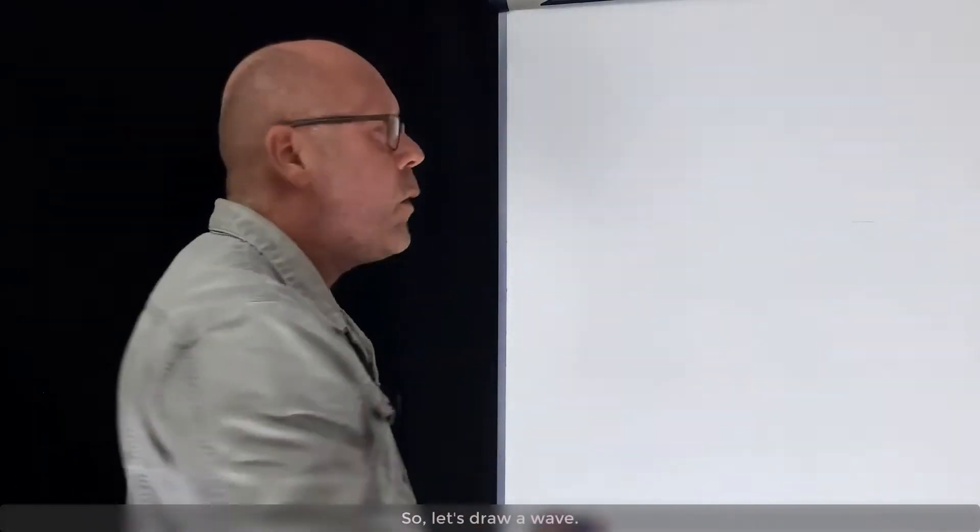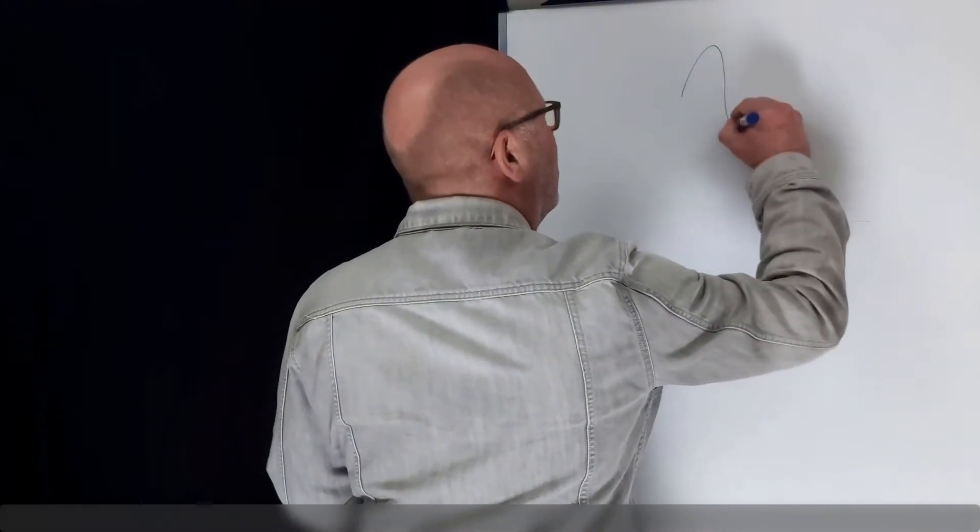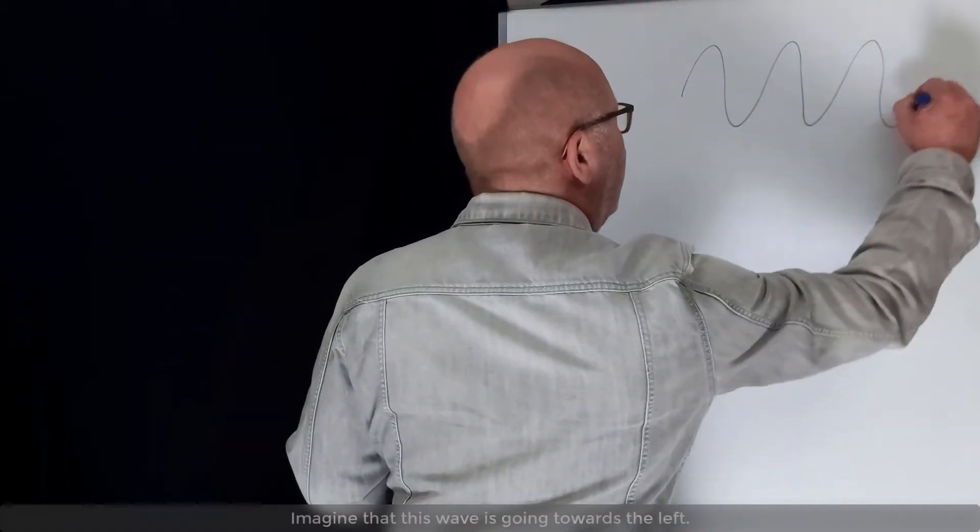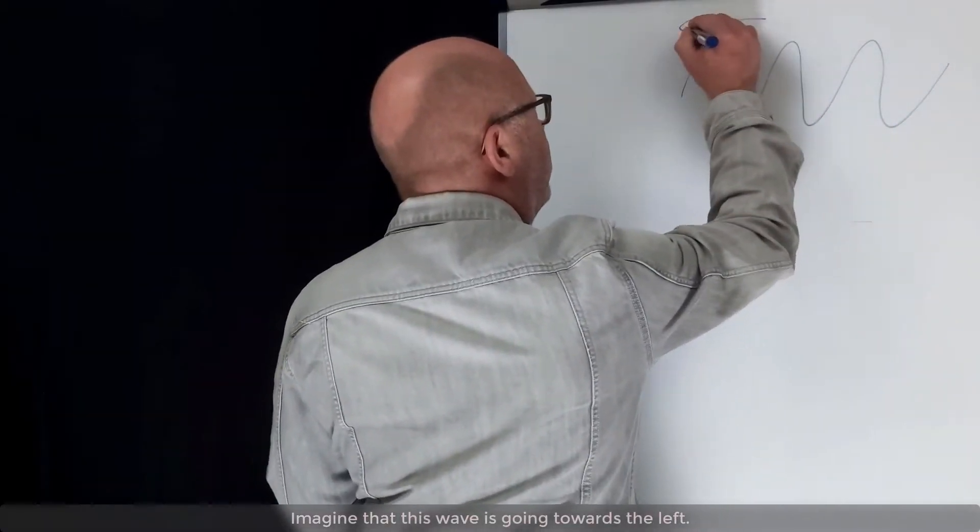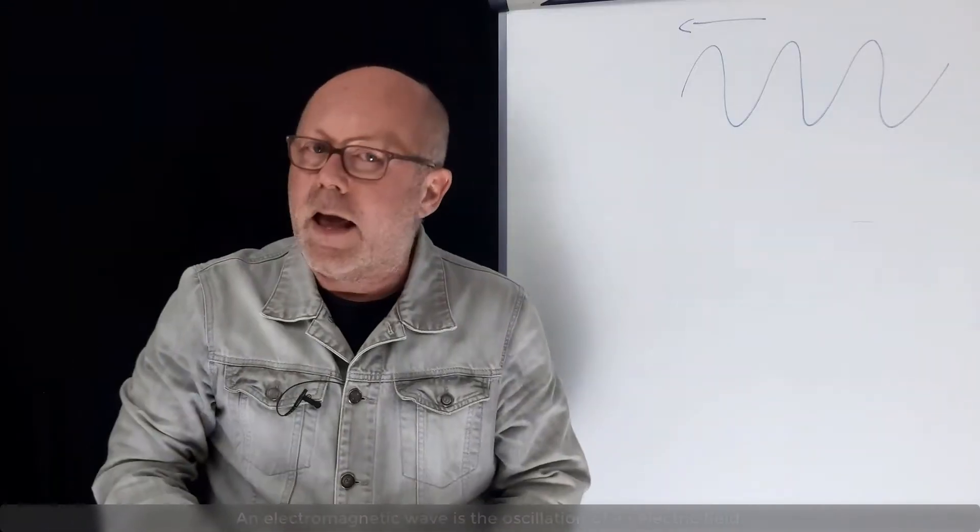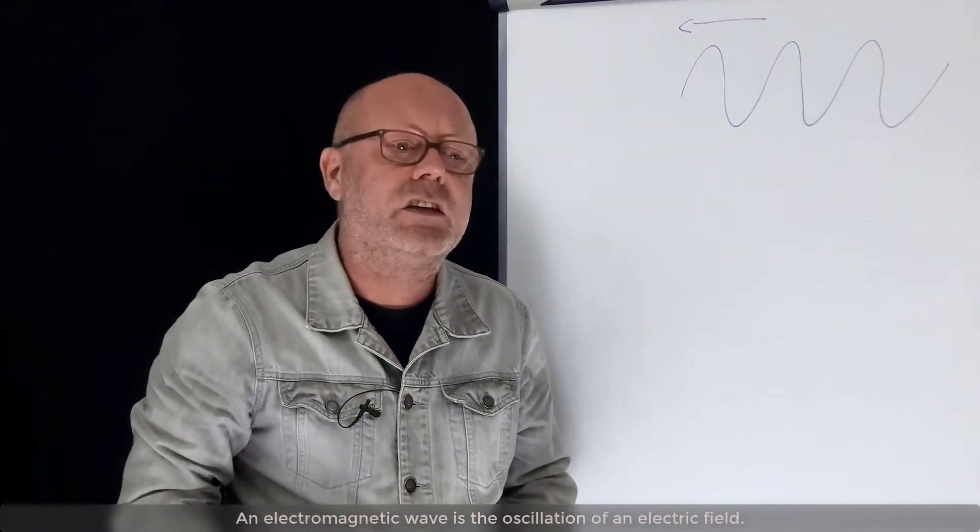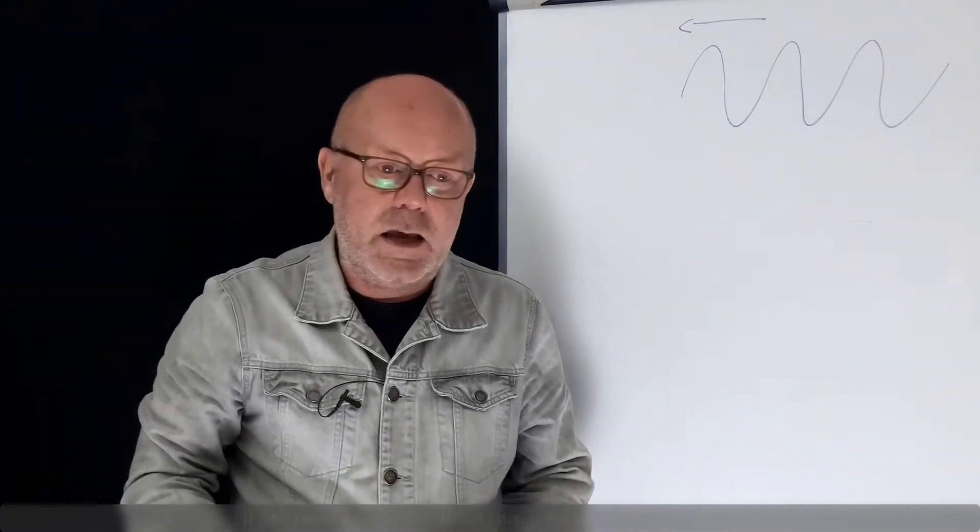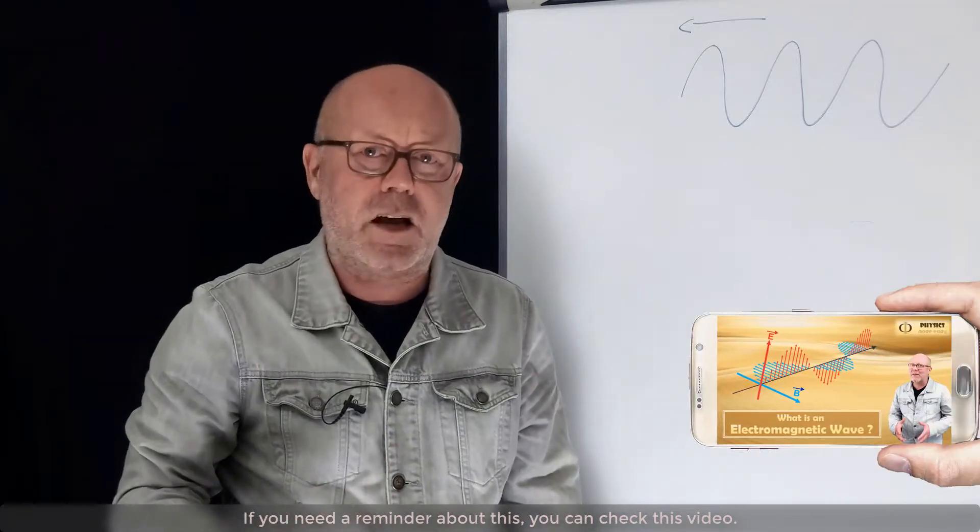Light is an electromagnetic wave. So, let's draw a wave. Imagine that this wave is going towards the left. An electromagnetic wave is the oscillation of an electric field. If you need a reminder about this, you can check this video.